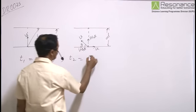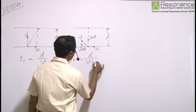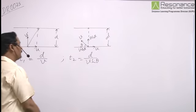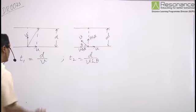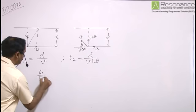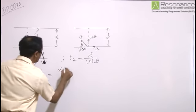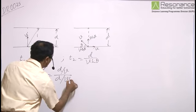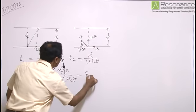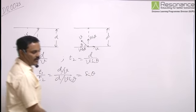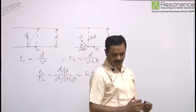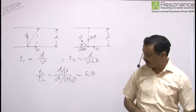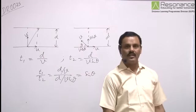T2 is equal to D by V sin theta. So the ratio of time taken T1 by T2 is D by V by D by V sin theta or equal to sin theta. So the ratio of time taken is sin theta and correct option is B.